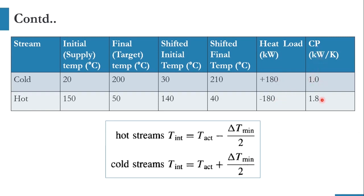CP values are given as 1 and 1.8. For the hot stream shifted interval, we subtract delta T minimum over 2. Since delta T minimum is 20°C, that gives 10°C. So 150 minus 10 equals 140, and 50 minus 10 equals 40. For the cold stream we add: 20 plus 10 equals 30, and 200 plus 10 equals 210. This completes the first table.